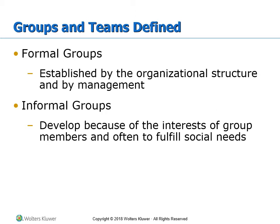You're in a formal group — established by organizational structure and management. In this case, you're placed in a cohort in an academic setting; that doesn't change. You don't have control over it. On the flip side, some of you have also established informal groups that develop because of members' interests and often to fulfill social needs — small pockets of students talking during breaks about common interests, food, or kids. In an informal group, you're free to leave.